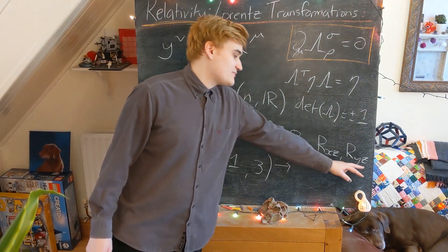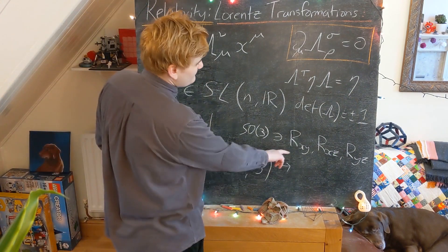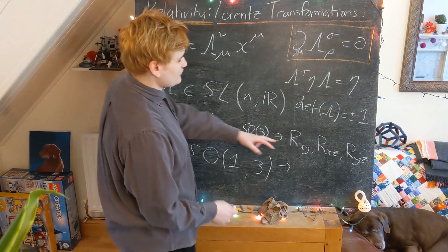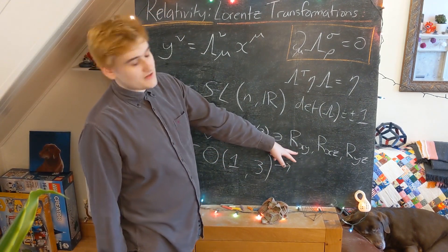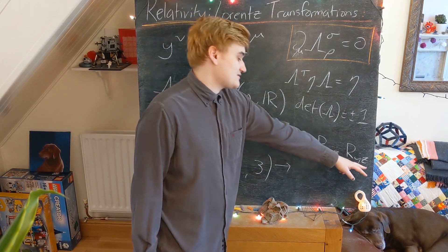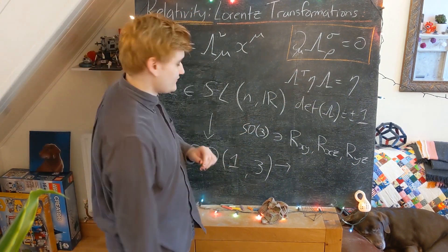So each one of these rotation matrices is going to have some parameter associated with it. So we would usually call these the Euler angles in three dimensions for a rotation around the Z axis, the Y axis, and the X axis. Let's say, theta, phi, psi.